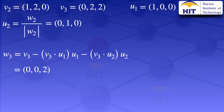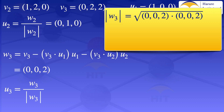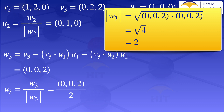Now that we have W3 = (0, 0, 2), we can evaluate U3. U3 equals W3 divided by the norm of W3. The norm of W3 is the square root of (0·0 + 0·0 + 2·2) = square root of 4 = 2. So U3 = (0, 0, 2) divided by 2 = (0, 0, 1).